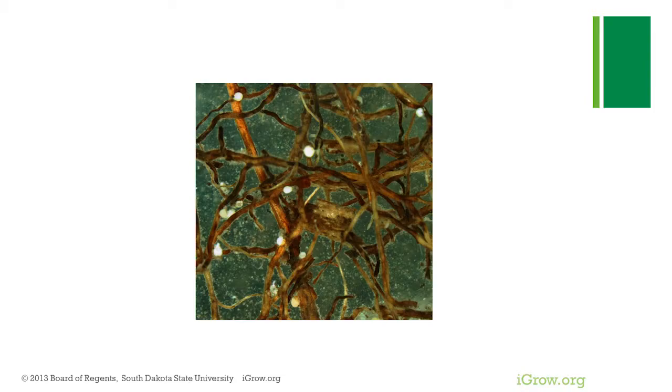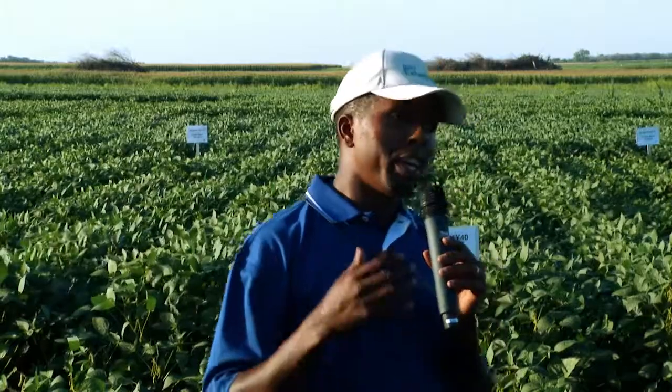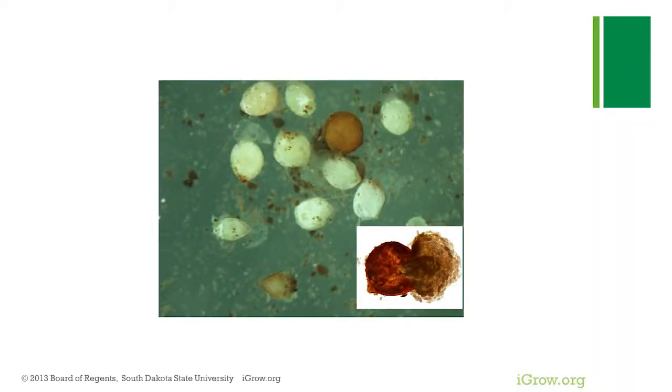The soybean cyst nematode is here, and it's really important that we get to know about it and learn how to manage it. The soybean cyst nematode is spread by soil. The eggs and the first juvenile stages of the nematode are so microscopic that you can't see them, and they cannot move on their own.